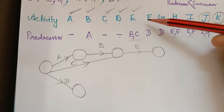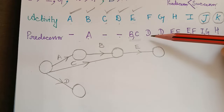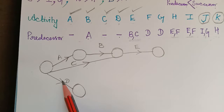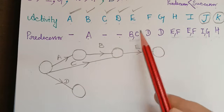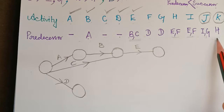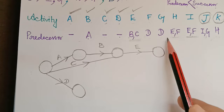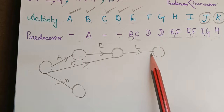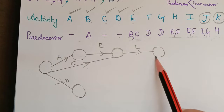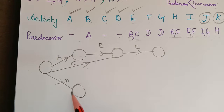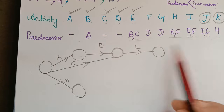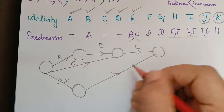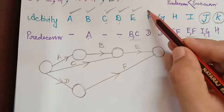For activity F, the predecessor is D, so the starting point is the end node of D. Checking the predecessor list, F appears along with activity E, which has already been constructed. Therefore, the ending node of activity F must be the same as the ending node of E. We draw F from D's end node to E's end node.